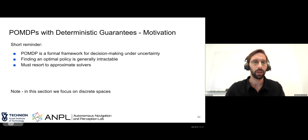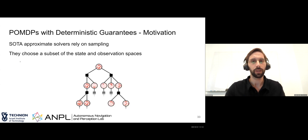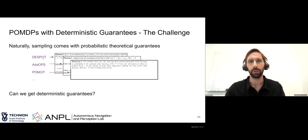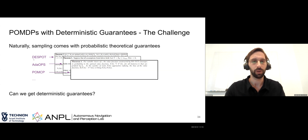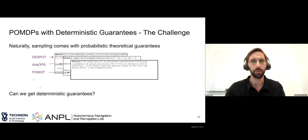State-of-the-art approximate solvers rely on sampling to choose a subset of state and observation spaces. Using sampling comes with probabilistic theoretical guarantees — algorithms like DESPOT, AdaOPS, and POMCP are currently state-of-the-art and all provide probabilistic guarantees. Sometimes, as with POMCP, they don't even provide finite-time guarantees, only stating that with infinite time it converges to the optimal solution. Here we ask whether we can obtain deterministic guarantees rather than just probabilistic ones.